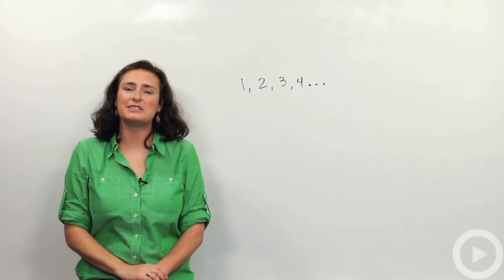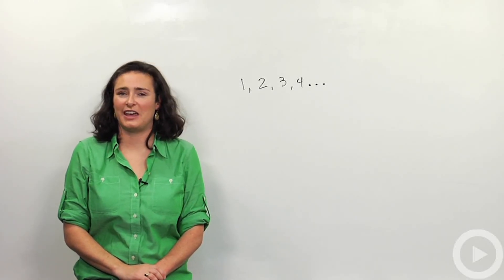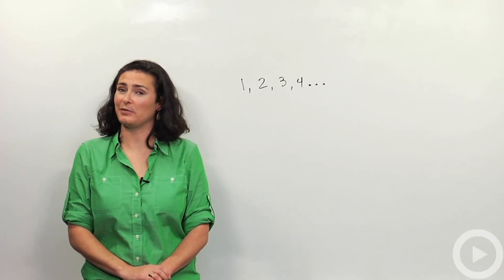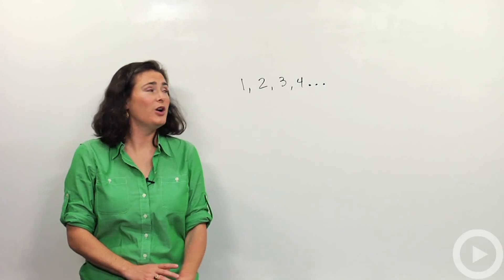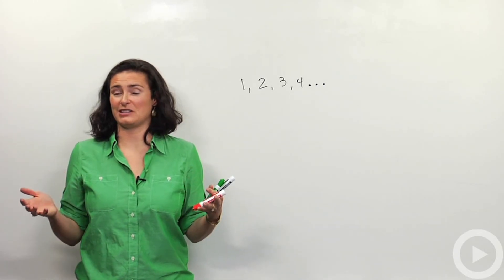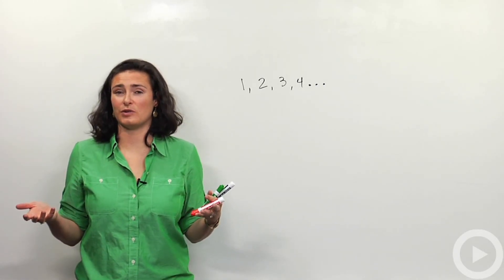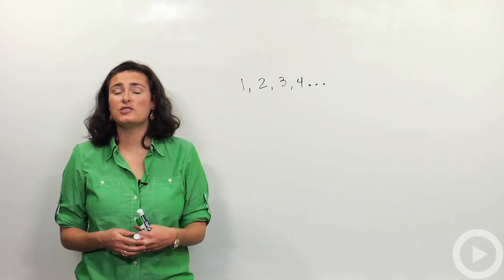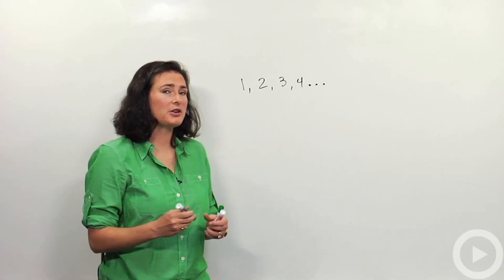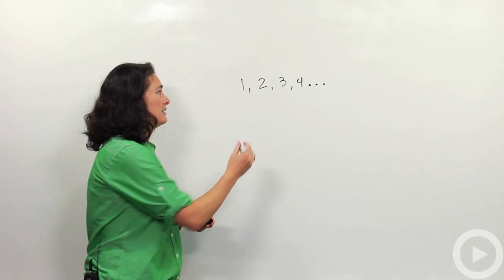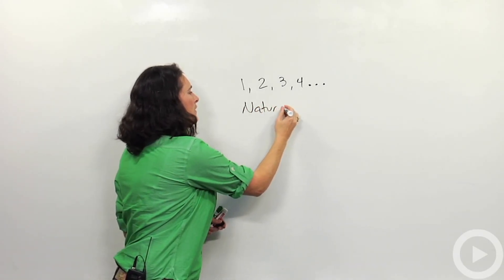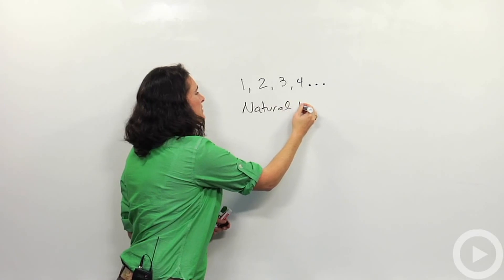We're going to talk a little bit about different classifications of numbers, or categories, or families of numbers. What I have on the board here are what we often think of as counting numbers — one, two, three, four. Those are called the natural numbers.